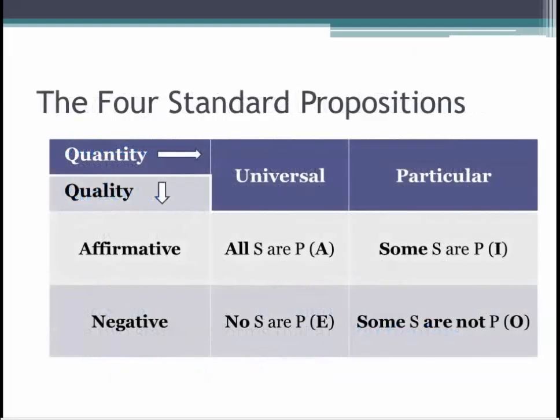One way to remember the characteristics of the standard propositions is to visualize them in a table with two rows and two columns. Affirmative propositions are in the top row and negative propositions are in the second row. Universal propositions are in the first column and particular propositions are in the second column. So A claims are affirmative and universal, I claims are affirmative and particular, E claims are negative and universal, and O claims are negative and particular.